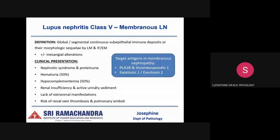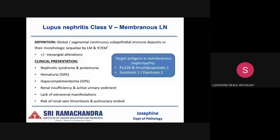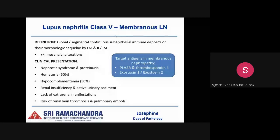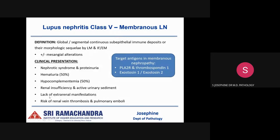Class 5 is defined by global or segmental continuous sub-epithelial deposits — unlike the mesangial or sub-endothelial deposits seen before. Mesangial alterations may or may not be present. These patients present with nephrotic syndrome and proteinuria; hematuria and hypocomplementemia may be seen in half of patients. Renal insufficiency and active urinary sediment are more commonly seen when class 5 is combined with class 4 or class 3. There is also a risk of renal vein thrombosis and pulmonary emboli in these patients.